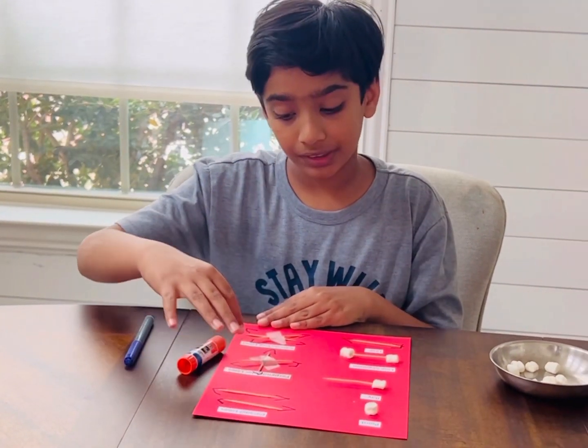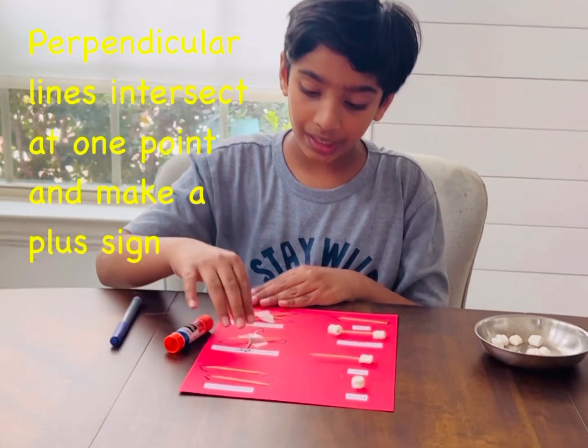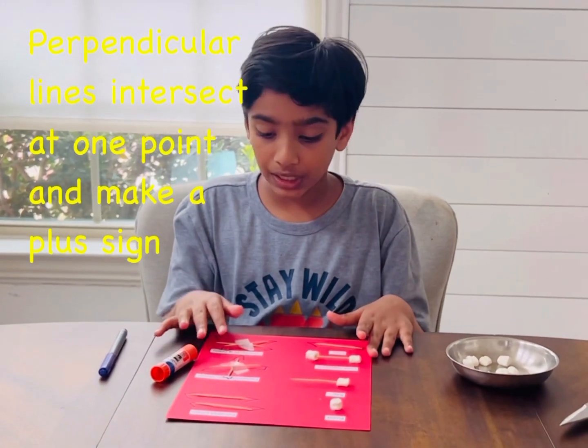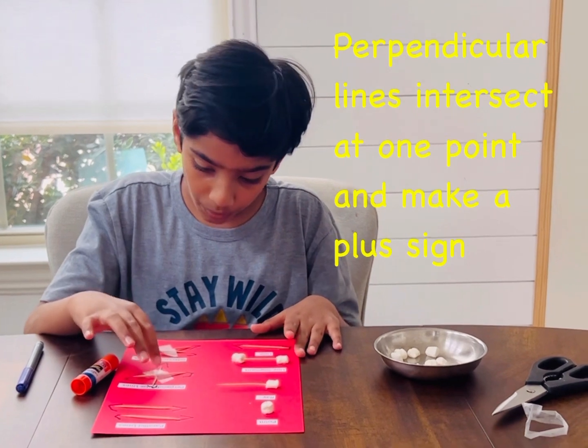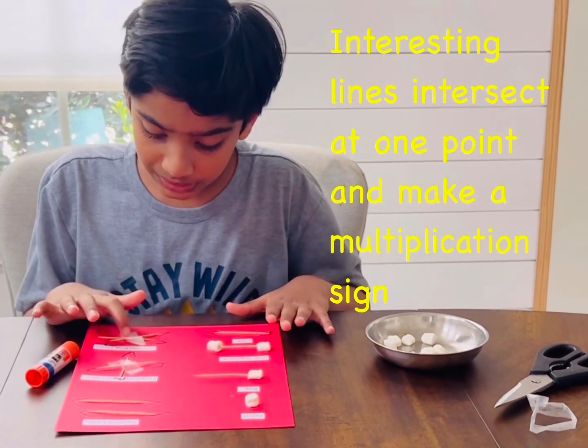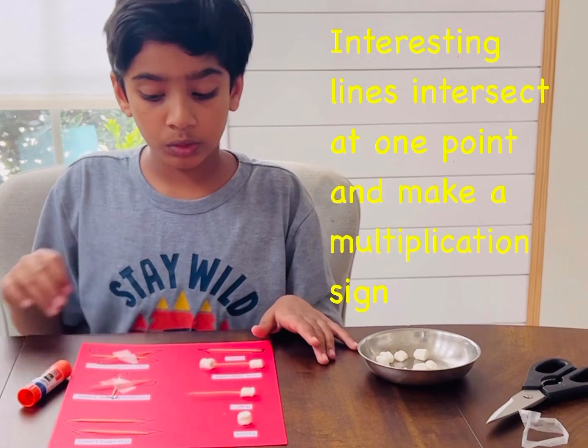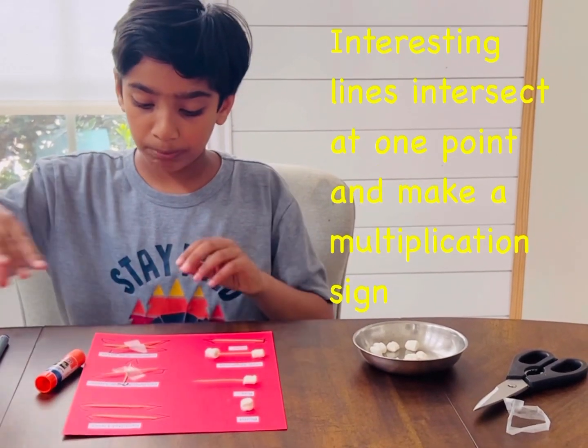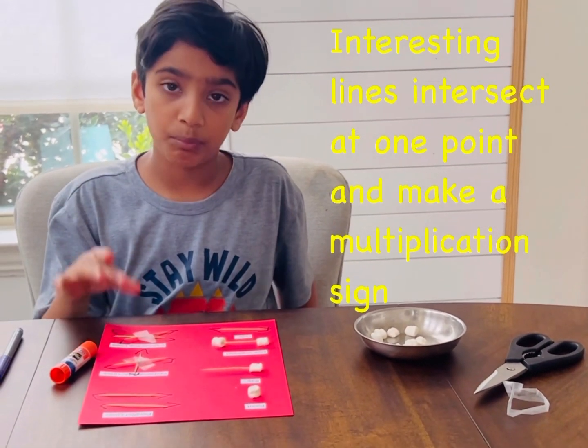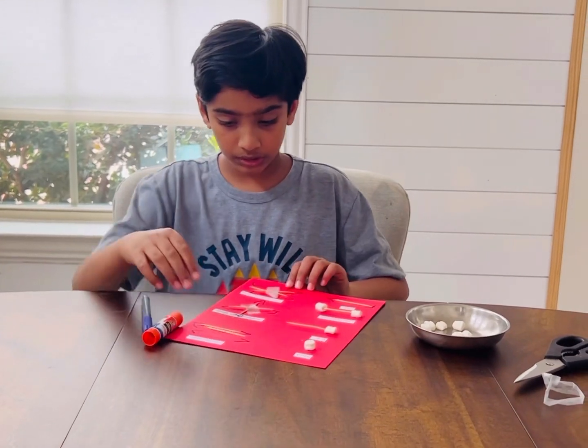perpendicular lines. The symbol is plus. They touch only at one point, and then there's intersecting lines, and they make a multiplication symbol. They keep on going. They touch at one point. And here is the picture.